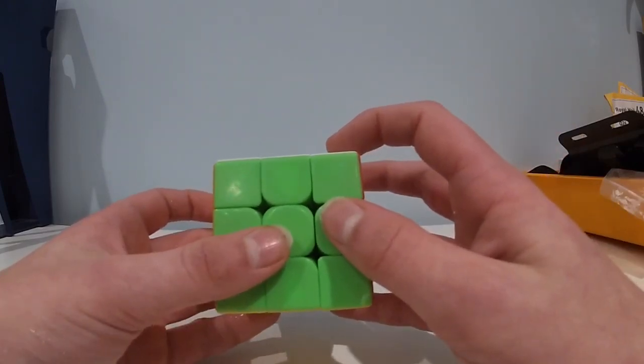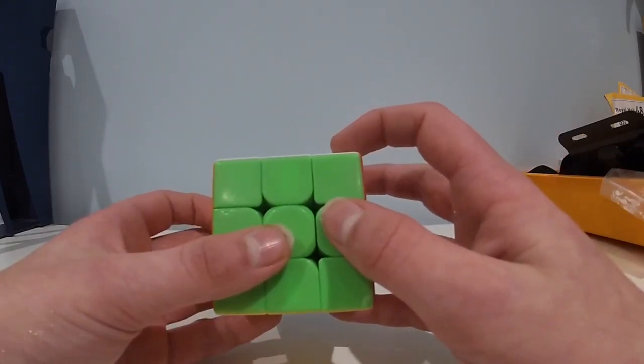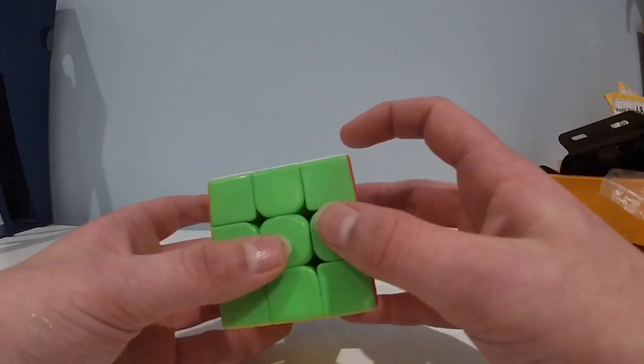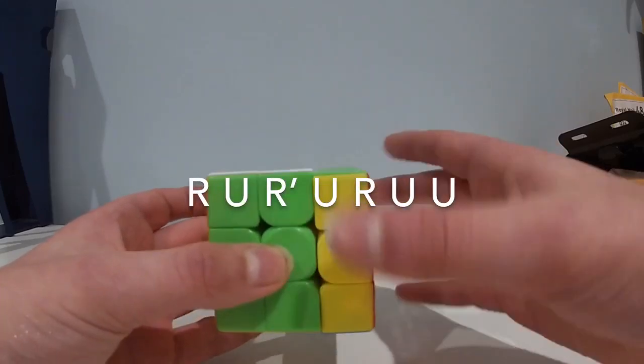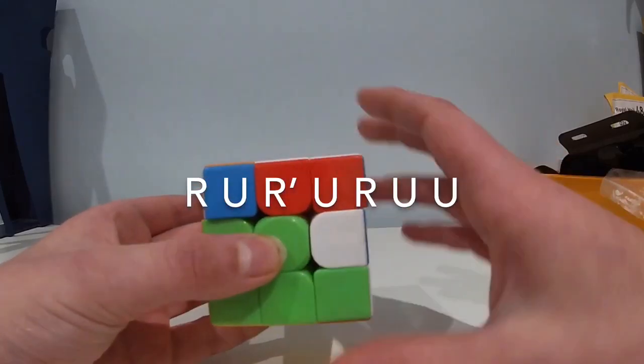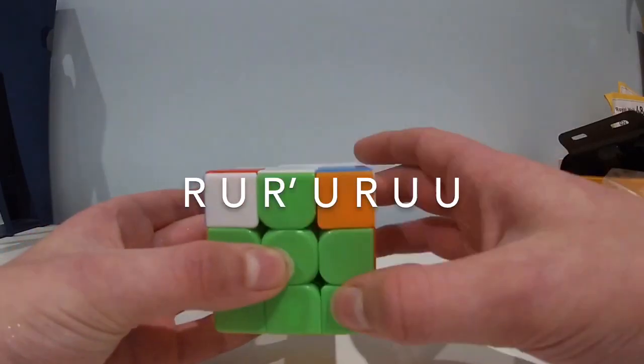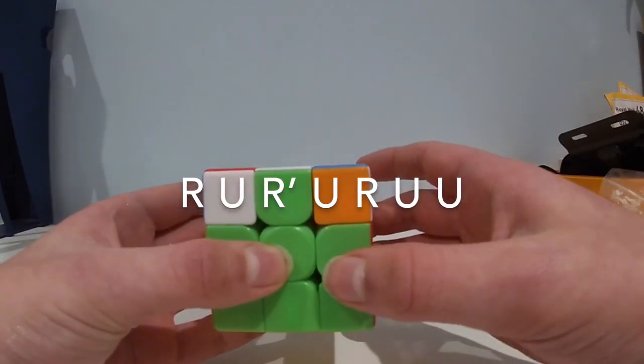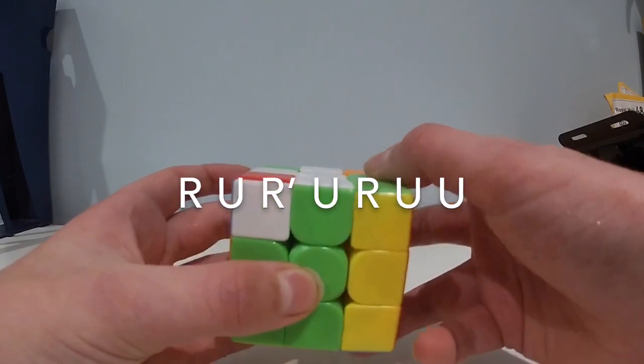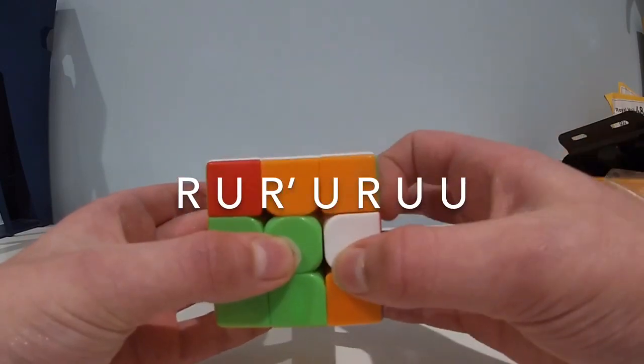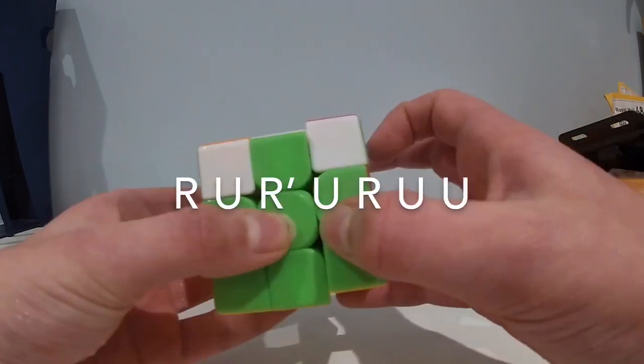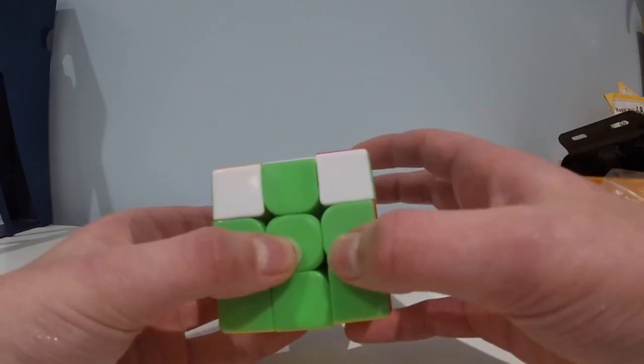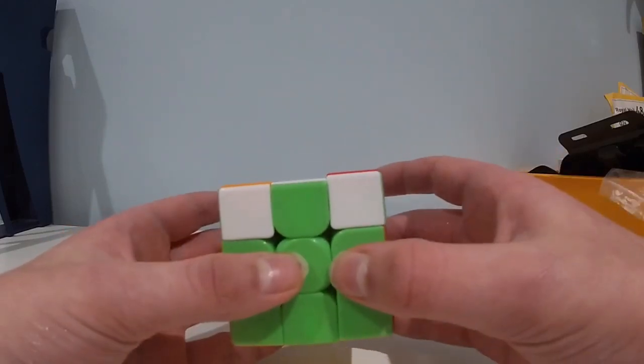This makes algorithms such as the Sune much faster as instead of re-gripping you can stay in home grip, and you don't have to re-grip and you start and finish in the home grip.